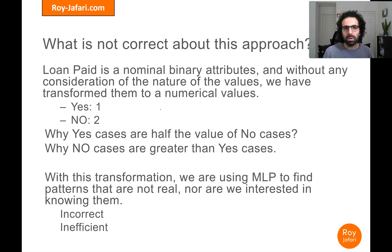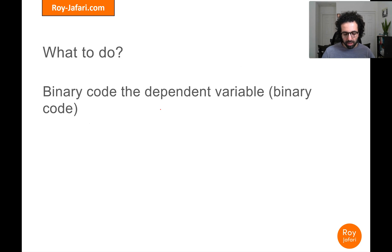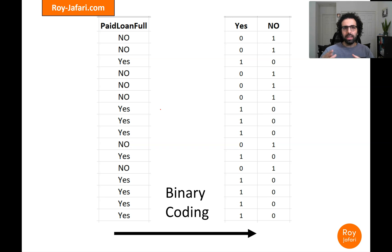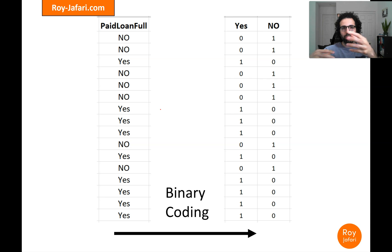It's not that we can't find a better solution for this conundrum. The better possibility is to binary code the dependent attribute — not with just one attribute but with two. With this binary coding we have a binary code for 'yes' and 'no'. We are indicating to MLP that there is a relationship between yes and no: if the binary code of 'yes' is higher, then the binary code for 'no' has to be lower.